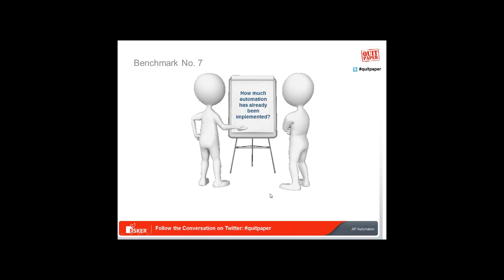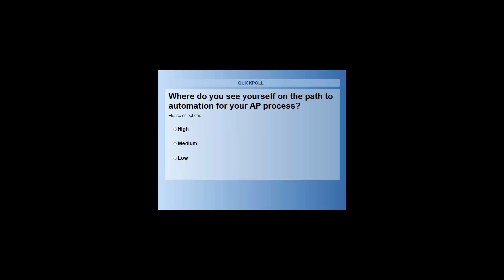Benchmark number seven looks at how much automation has already been implemented — more of a context question. Where do you see yourself on the path to automation for AP process? High means significant use of imaging or electronic invoicing, automated workflow, near-paperless T&E, electronic payments and card use, and possibly invoice data extraction. Medium means some use of scanning and filing but no true automation prior to posting, still dealing with manual paper-based processing. Low means a mostly paper-based and manual process and environment.